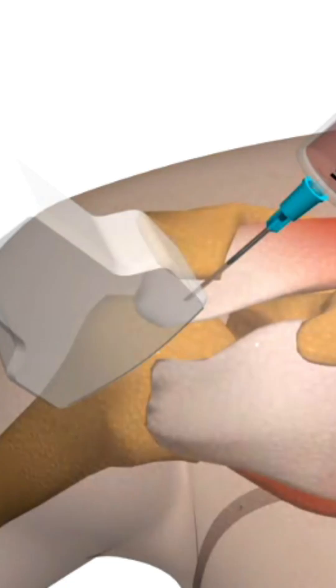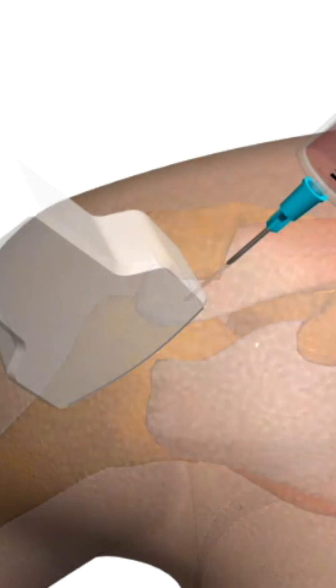2. Rotator Cuff Disorders. Ultrasound is particularly important in rotator cuff disorders. It assesses the state of the rotator cuff and precisely determines the location for injection therapy if needed. Ultrasound provides detailed images of the damaged area, helping to assess the extent of rotator cuff damage and decide on the appropriate treatment method.